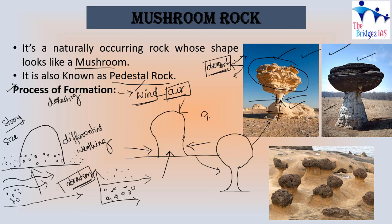Almost 95% of mushroom rocks are found in desertic areas, but there are chances that some mushroom rocks are also formed by the erosion activity of water. For example, a mushroom rock can form on a beach where water continuously interacts with the rock. The same process happens — more force at the bottom causes differential weathering. Additionally, water contains many salts, so there is also the action of solution, dissolving some of the minerals of the rock.